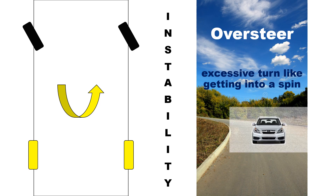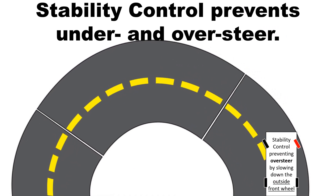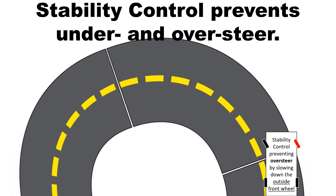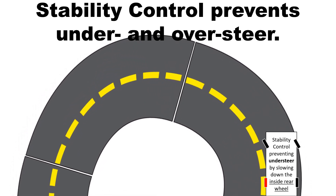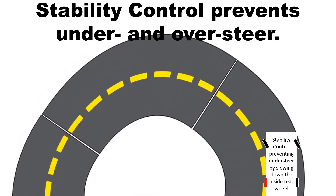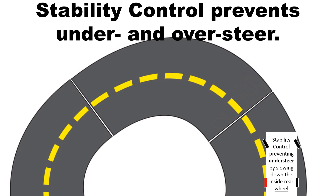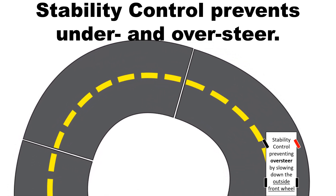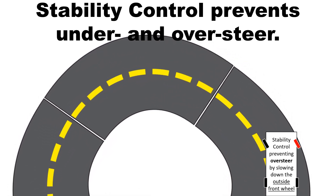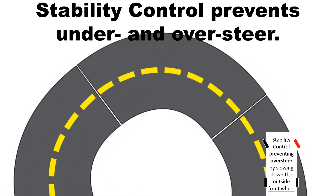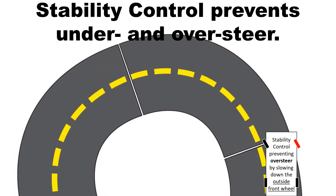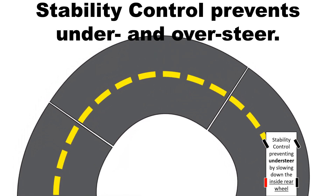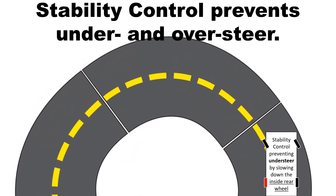The stability control prevents understeering by slowing down the inside rear wheel to forcefully turn the straight-going car with lost front wheel grip, and prevents oversteering by slowing down the outside front wheel to countersteer the excessively turning car with lost rear wheel grip.